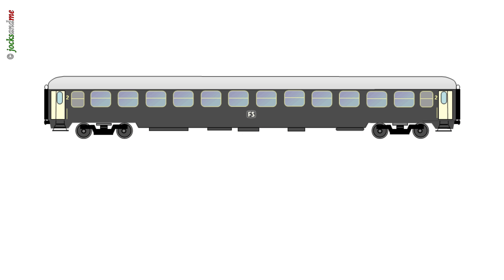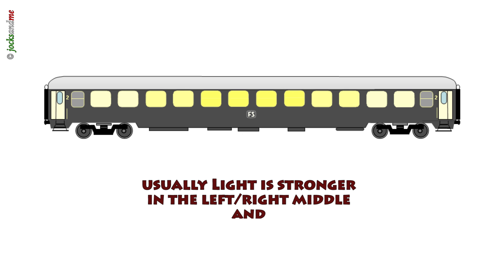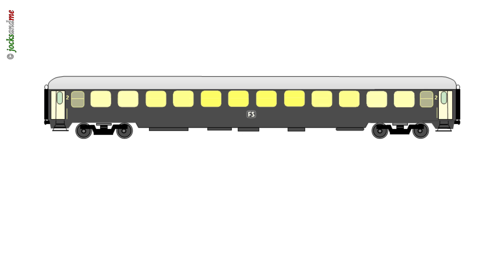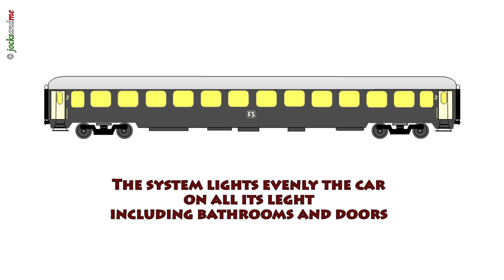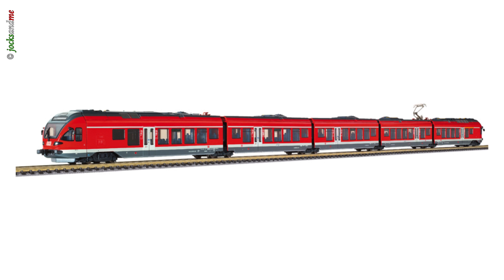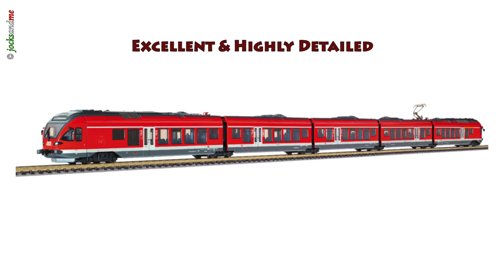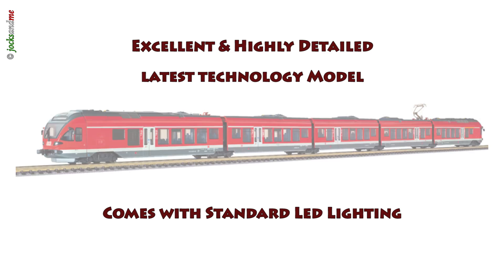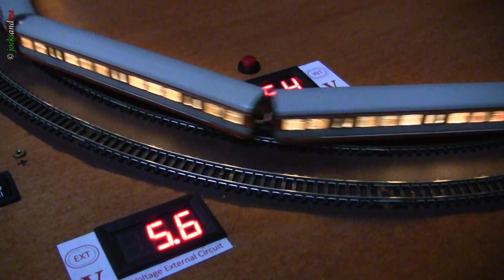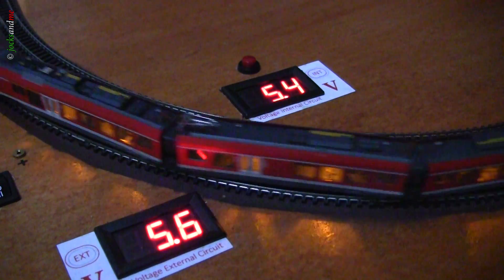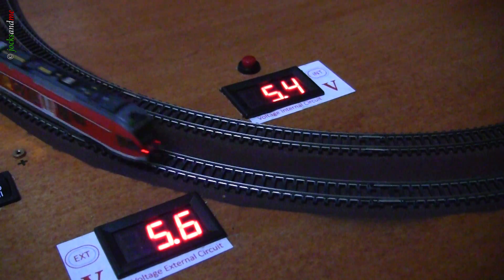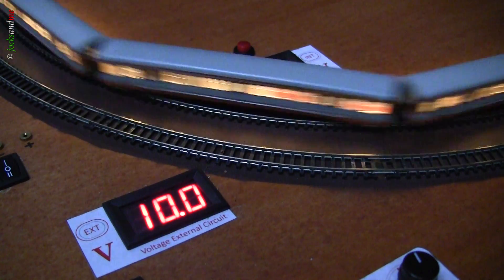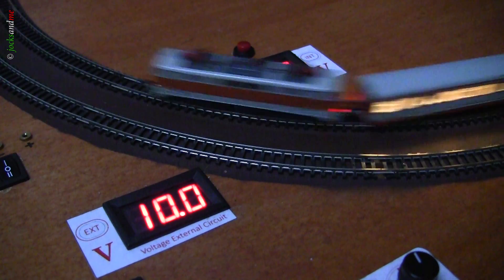Another big advantage of this system is to have an even lighting along the full length of the coach. Normally, the light is stronger in the middle and uneven. In this case, you light everything, including bathrooms and doors. Let's make a comparison between this lighting system and a fantastic model which is state-of-the-art, highly detailed, with excellent movement, and comes with standard LED lights. Starting at very low voltages, the light of the standard model is very low and shows some reflection. If you increment the voltage, it is much stronger, but it is uneven and very reflective.